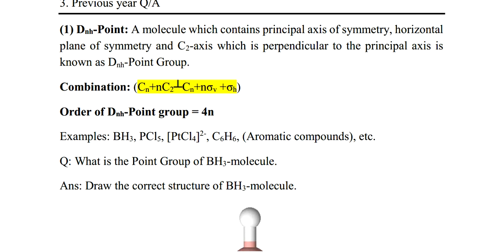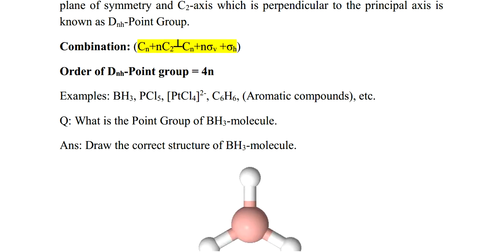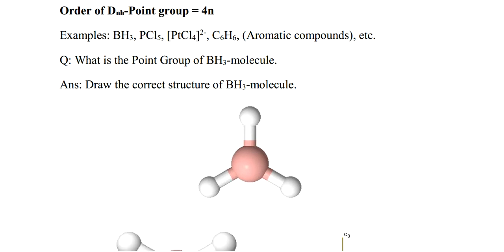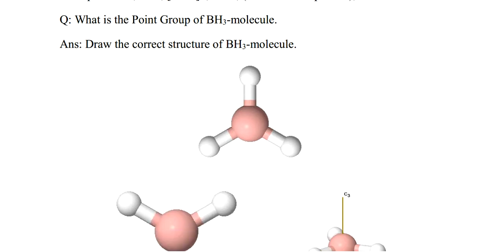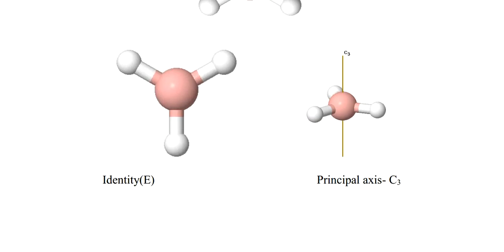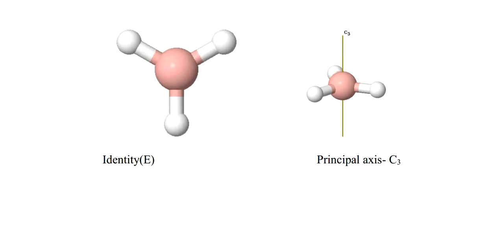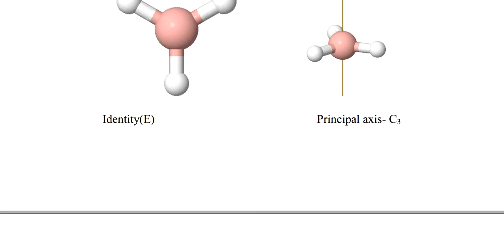Let's see: what is the point group of BH3 molecule? Can you draw the structure of BH3? You can do it by yourself — please try. Draw the correct structure of BH3. You can see here — this is the BH3 molecule. Can you identify the symmetry elements present? There is identity, and the principal axis of symmetry passes through the origin. By rotation of 120 degrees you get the same molecule, so there is a C3 axis of symmetry present.